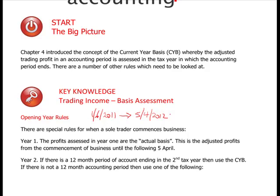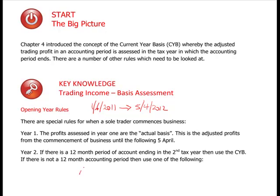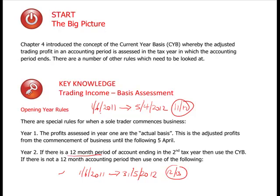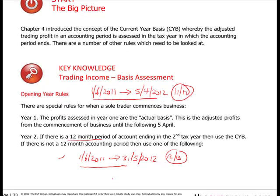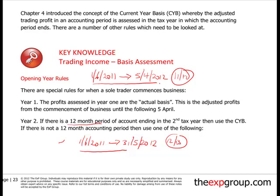Year 2: if there is a 12-month period of account ending in the second tax year, then use the current year basis. So if Mr. Joe Bloggs produces accounts from 1st of June 2011 to the 31st of May 2012, that ends in 2012/13. Therefore you can use a 12-month period of account ending in the second year. Notice this period is mostly included within the first period, so you're going to tax quite a lot of it twice — it's going to get taxed twice.